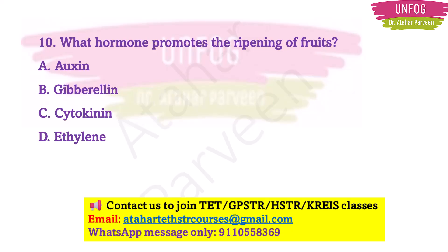Question 10: What hormone promotes the ripening of fruits? The options are auxin, gibberellin, cytokinin, and ethylene. The hormone responsible for ripening fruits is ethylene. Nowadays fruit sellers take unripened fruits, keep them in a room, and artificially apply ethylene so the fruits ripen. Take it as an assignment to learn the functions of auxin, gibberellin, and cytokinin.